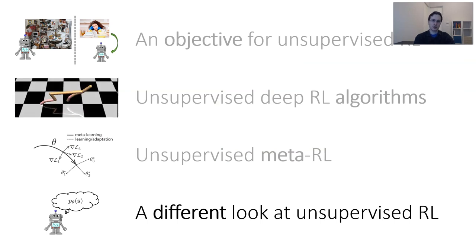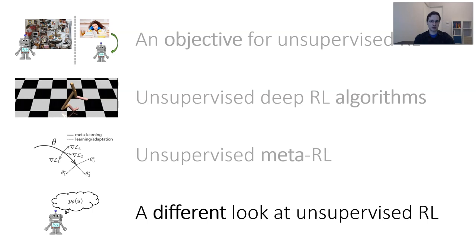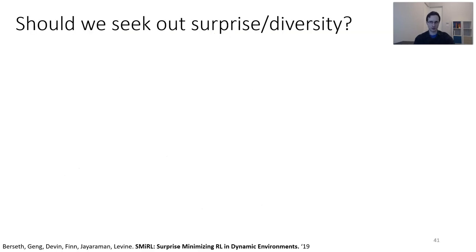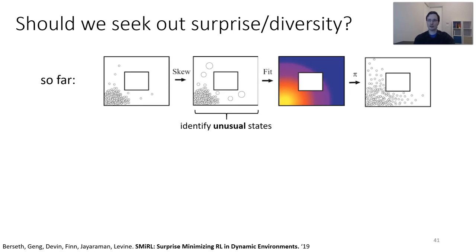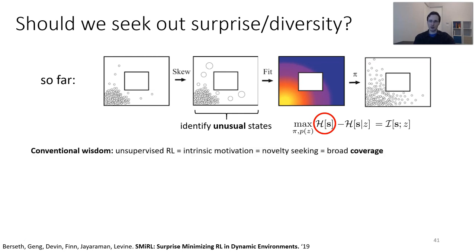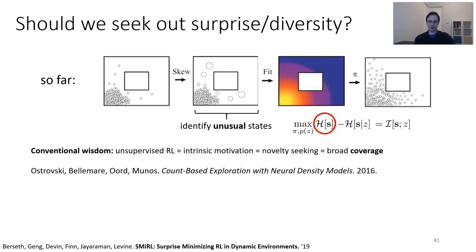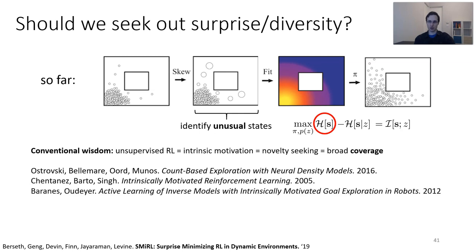The last topic I'm going to talk about will challenge some of the assumptions I made previously, and discuss how we can take a different look at unsupervised reinforcement learning algorithms that might be a better fit for some realistic environments. So far, all the unsupervised RL methods we discussed are predicated on the notion that we should seek out diversity or coverage. When I talked about SkewFit, I discussed identifying unusual states and upweighting them. Whenever we maximize mutual information between states and tasks, a big part of that is maximizing the entropy of those states — covering as many possible things as possible. The conventional wisdom is that unsupervised RL is essentially related to intrinsic motivation: a novelty-seeking procedure that aims for broad coverage. This idea appears in many prior works in exploration, intrinsic motivation, curiosity, and others.